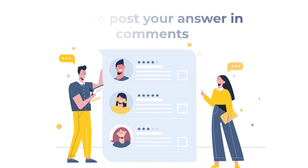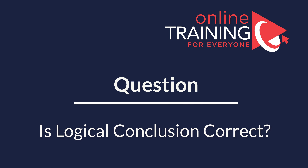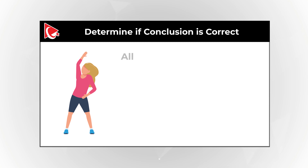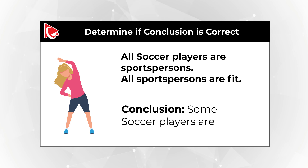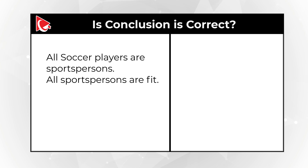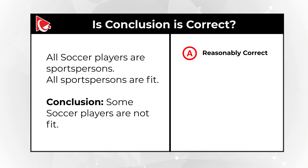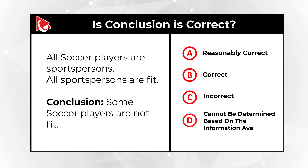Here is a frequently used question to test how logical you are. You need to determine if a conclusion is correct based on the statements. Statement: All soccer players are sports persons. And all sports persons are fit. Conclusion: Some soccer players are not fit. You have four choices: A, it's reasonably correct; B, it is correct; C, it's incorrect; and D, cannot be determined based on the information available.